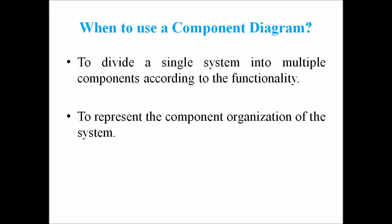There arises a question: when should we use a component diagram? A component diagram represents various physical components of a system at run time. It is helpful in visualizing the structure and organization of a system. It describes how individual components can together form a single system. Following are some reasons which tell when to use a component diagram: firstly, to divide a single system into multiple components according to functionality; and secondly, to represent the component organization of the system.